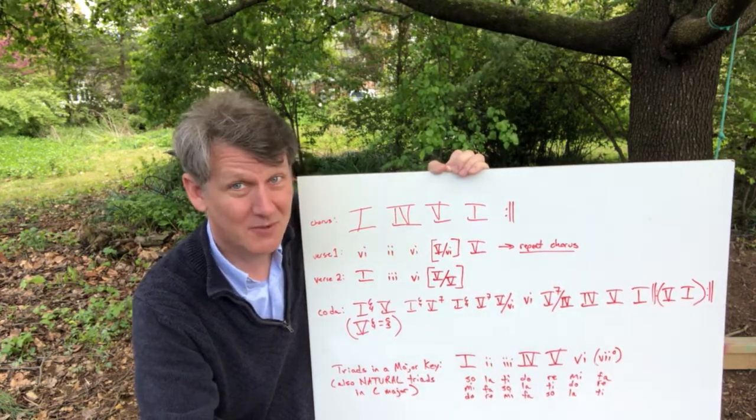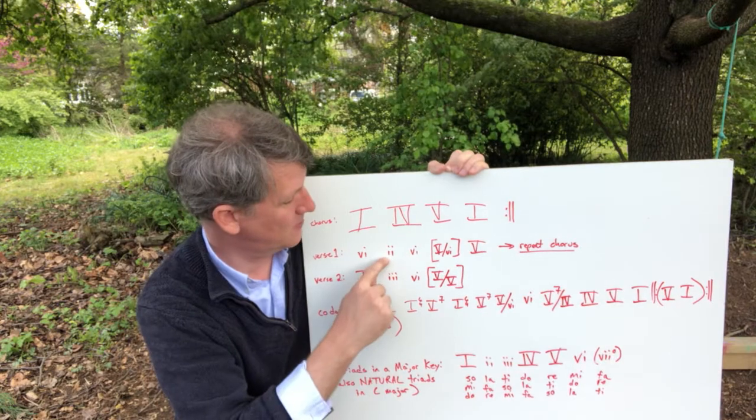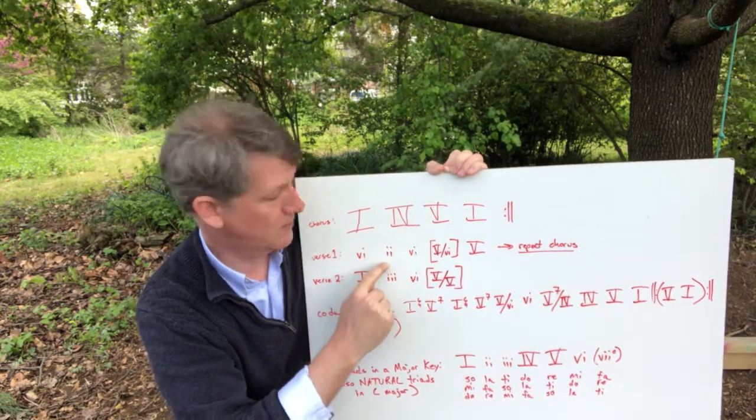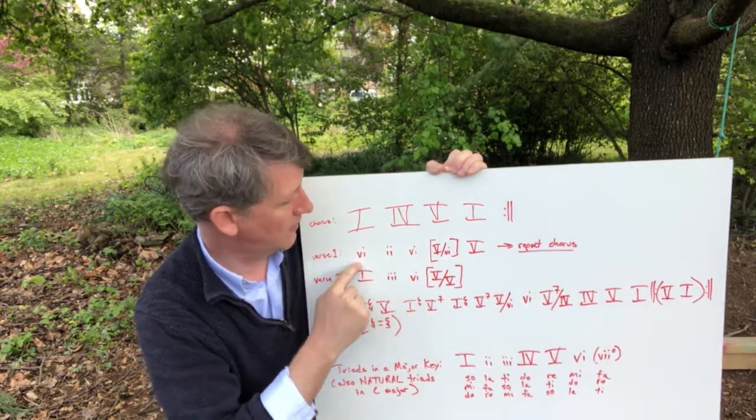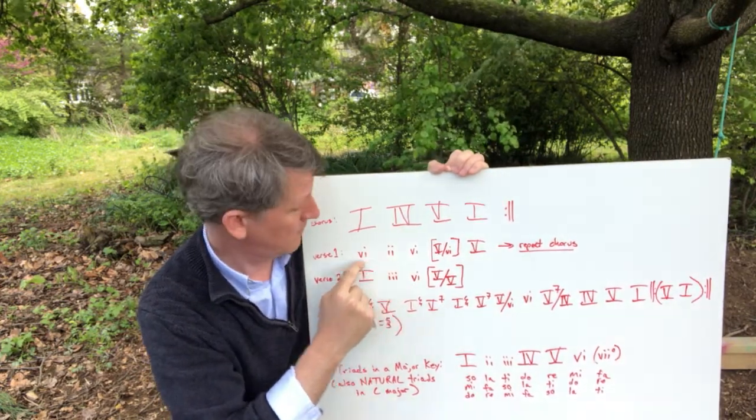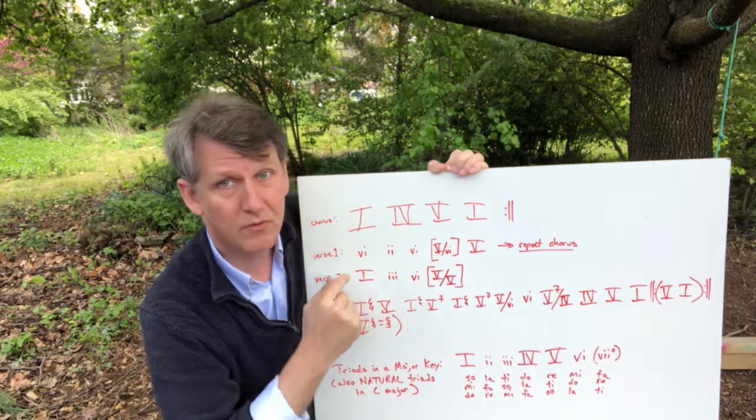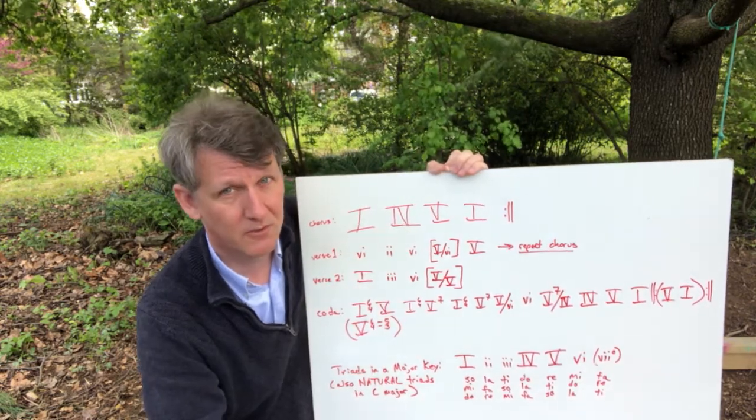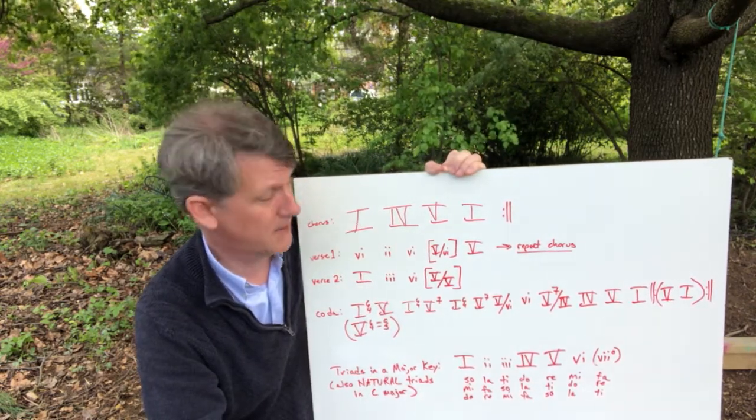Then the next two most common chords that you'll hear are these two minor chords, six and two. So LA LA DO MI RE RE FA LA. And those are the most common minor chords that you'll hear in a major key.